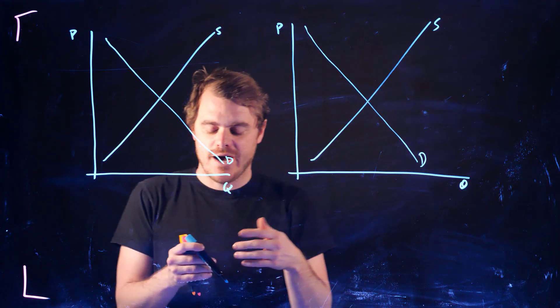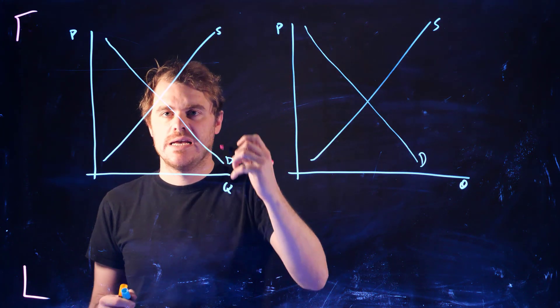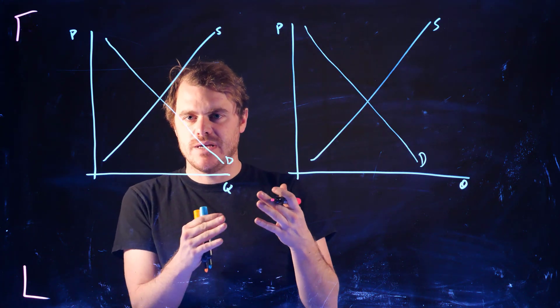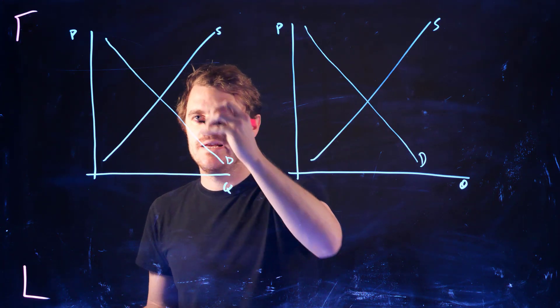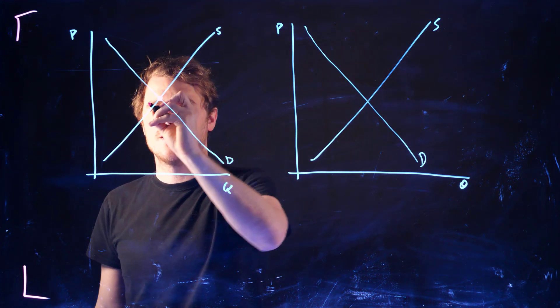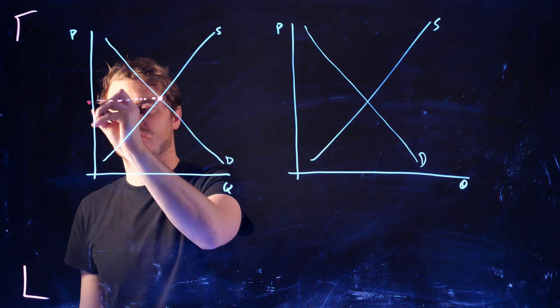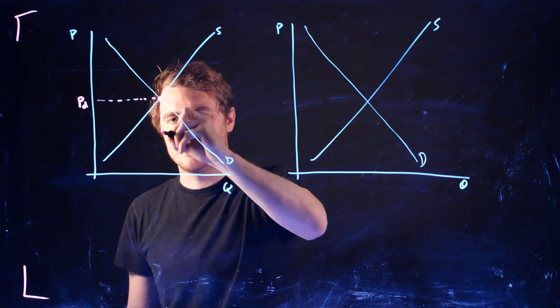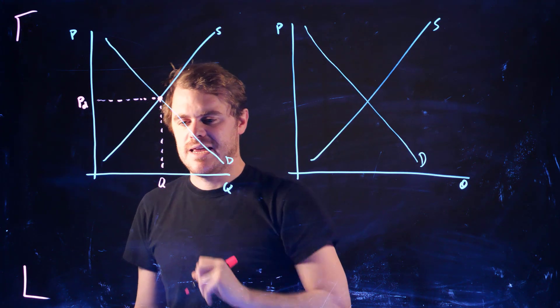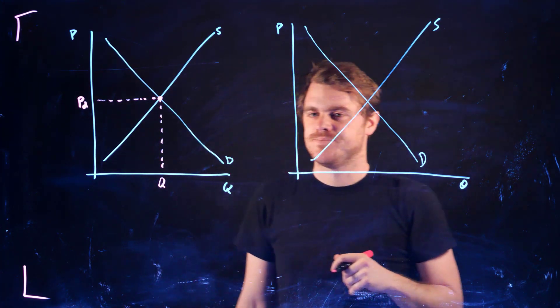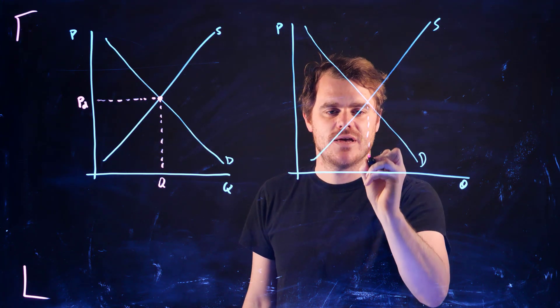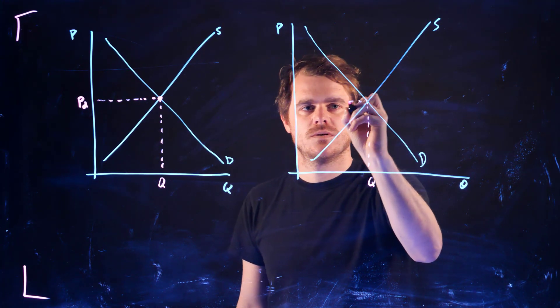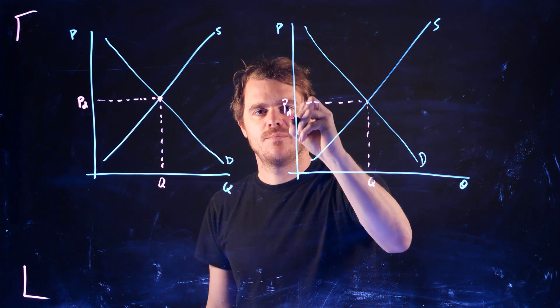Well, if we had no trade, then where these two met would be the prevailing price and quantity in the market. So this is like the autarchy price, which we denoted PD. And this would be the quantity in that autarchy price, or that autarchy market. And same thing over here, Q and PD.